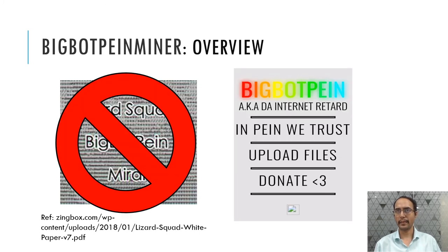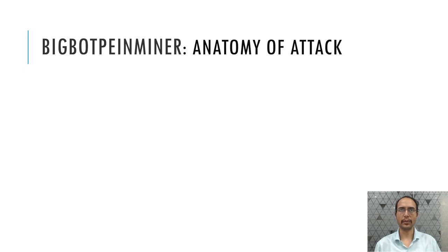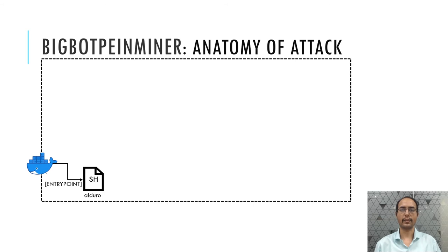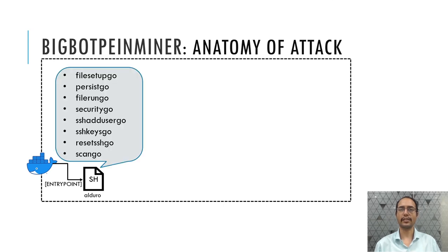The BigBotPen name is derived from the domain it uses — a website which allows sharing of components publicly in an anonymous way. All components used by this threat are hosted on the BigBotPen domain. The attack initiates from a container endpoint which executes a shell script to download the 'aldoro' script. This aldoro script is termed by us as the BigBotPen Miner or BBP Miner — the core module which executes in this thread. It is also modular in nature, has several functions to perform individual tasks, and downloads several components during execution.